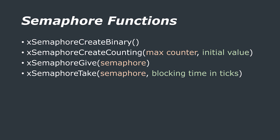Here are the key functions you will need to use semaphores in your projects. To create a binary semaphore, use xSemaphoreCreateBinary. To create a counting semaphore, use xSemaphoreCreateCounting, which takes arguments for the maximum counter value and its initial value. To give a semaphore, use xSemaphoreGive with the handle to the semaphore. To take a semaphore, use xSemaphoreTake, which takes the semaphore handle and the time in ticks to wait for the semaphore to become available.